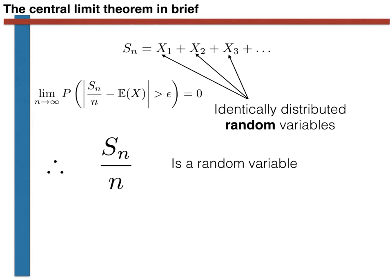This is all very nice, but rather useless in practice. After all, we cannot do an infinite number of experiments. Hence, for all practical examples, Sn over n will still be a random variable.